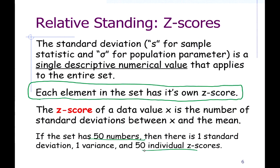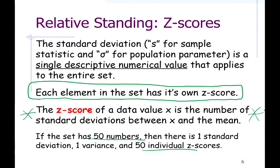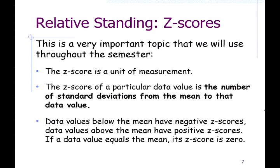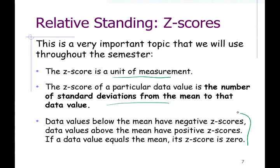Here's the important definition: the z-score of a data value x is the number of standard deviations between that data value and the mean. Z-scores are positive if you're above average and negative if you're below average. Above the mean, you have positive z-scores; below the mean, you have negative z-scores.